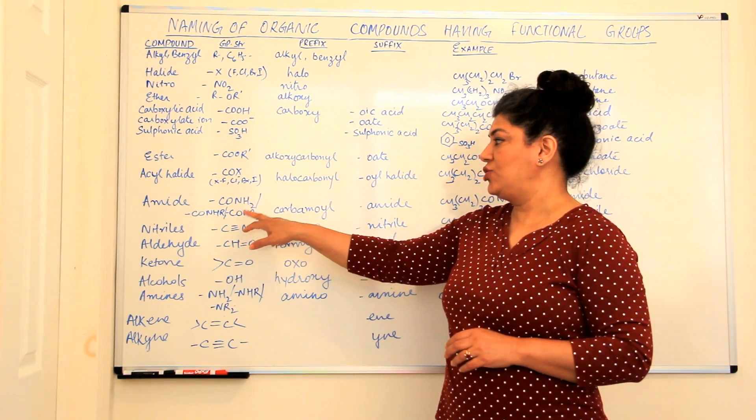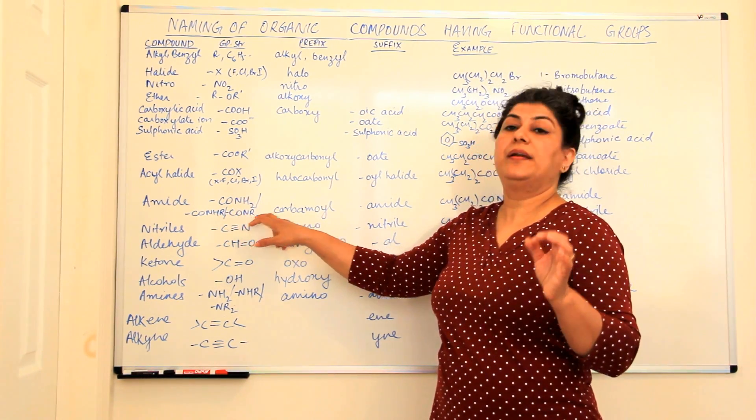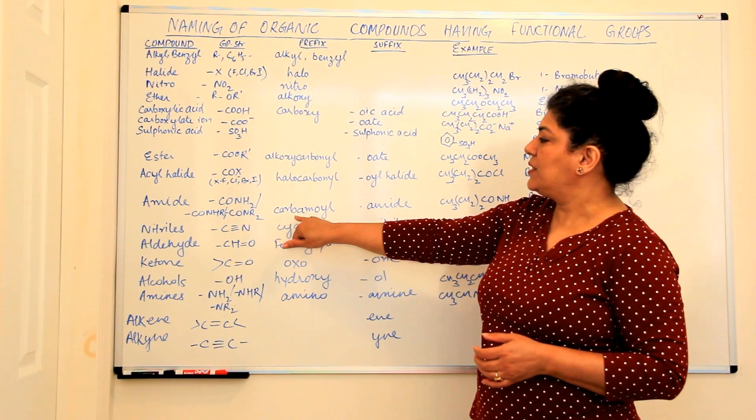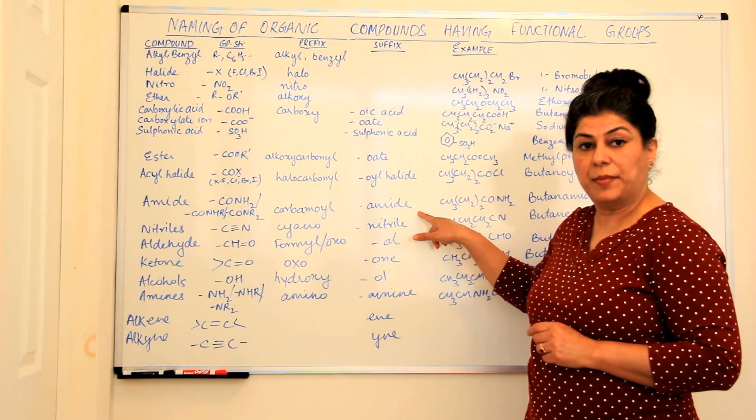Amides are CO-NH2, CO-NHR and CO-NR2 where the hydrogens are substituted by alkyl groups. And it is written as a prefix, as carbamoyl and as a suffix, it is written as an amide.